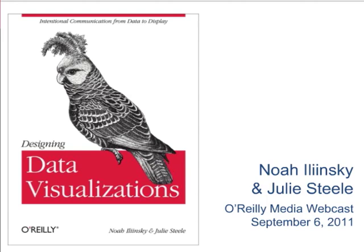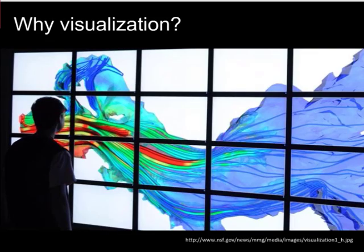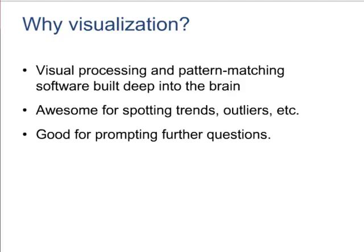One of the interesting things visualization can help us do is differentiate between sets of numbers that may look similar statistically. Many of you will be familiar with Anscombe's Quartet, developed by a statistician — four sets of data that look identical when analyzed statistically, but are actually very different once you plot them on a graph. You can see the blue diagonal line is the statistical rendering, but the actual individual data points show very different regression lines.